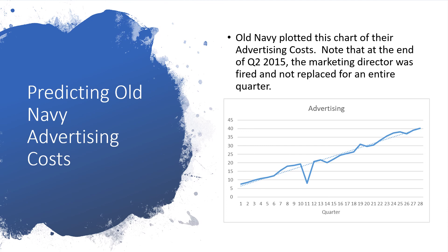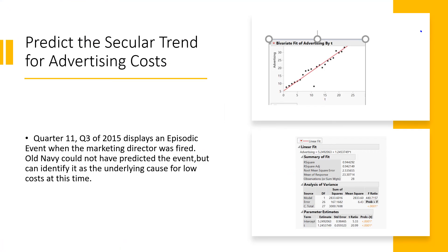The next set of data is Old Navy advertising costs. Overall, this data has a straight-line trend, but there's a big dip in it. In the scenario, it says that at the end of quarter 2 in 2015, the marketing director was fired and not replaced for an entire quarter. That's the big V-shape you see in the plot — we're going to call that an episodic event. Looking at our trend line, it's an excellent line with the points very close to it. The one severe outlier is the episodic event — Old Navy could not have predicted this, but they can identify it after the fact.